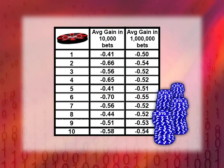After betting 10,000 times on red, the average loss in this column varied from a low of about 41 cents to a high of 70 cents. The average looks very close to the 53-cent average loss we computed from our expected value analysis.